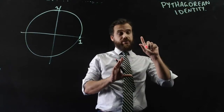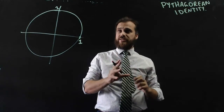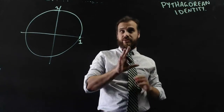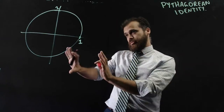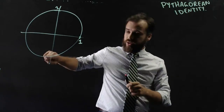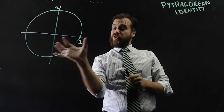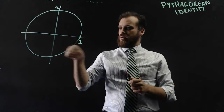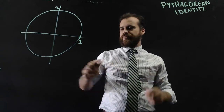A quick video on something called the Pythagorean identity. To talk about the Pythagorean identity, we need to talk about a unit circle. Remember, a unit circle has a radius of 1. We're on a Cartesian plane right now.